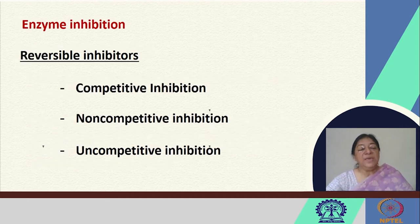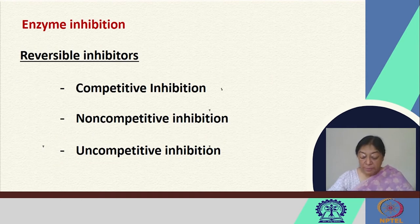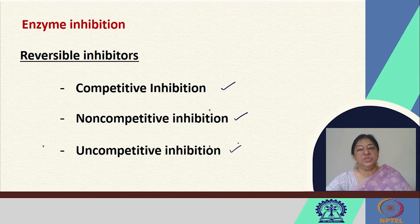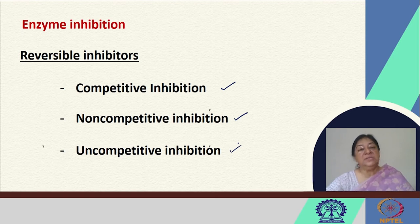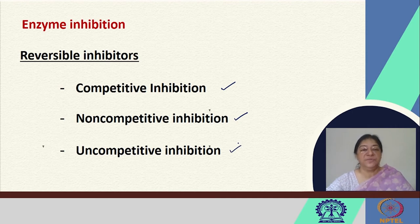In the case of reversible inhibitors, we have competitive inhibition, non-competitive inhibition, and uncompetitive inhibition. We will see what these three types of inhibition mean in terms of kinetics and the specific Michaelis-Menten values that we will observe.